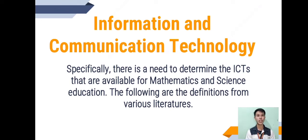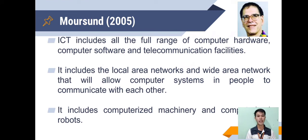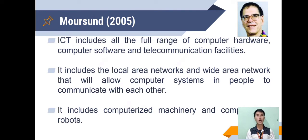Now let's move on to information and communication technology. There is a need to determine the ICTs available for mathematics and science education. The first definition is from Morrison of 2005. According to him, ICT includes the full range of computer hardware, computer software, and telecommunication facilities. It includes local area networks and wide area networks that allow computer systems and people to communicate with each other. It also includes computerized machinery and computerized robots, as well as digital cameras, computer games, CDs and DVDs, cell phones, telephones, telecommunication satellites, and fiber optics.